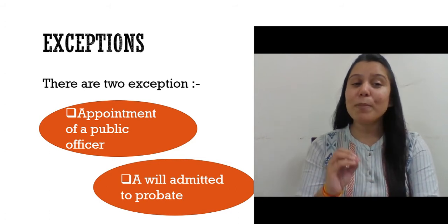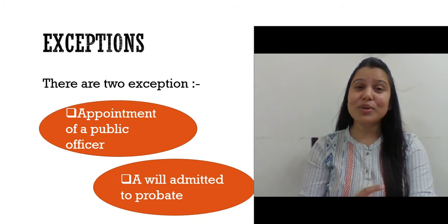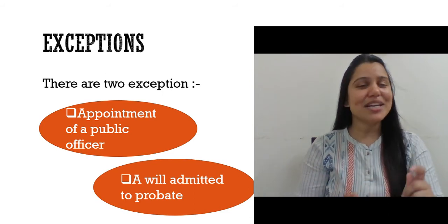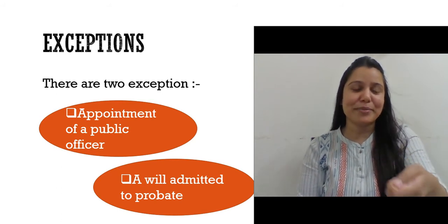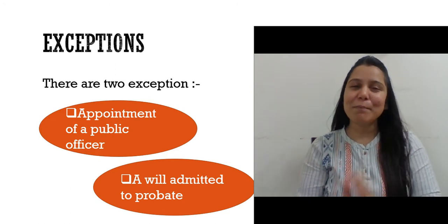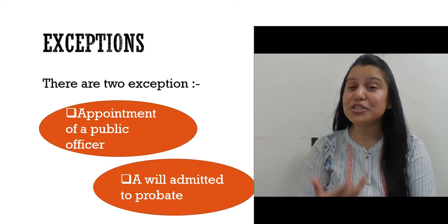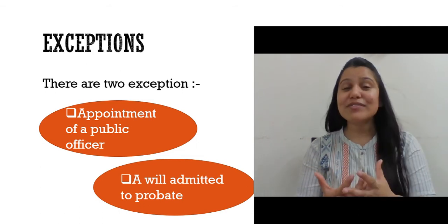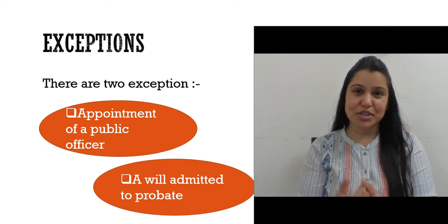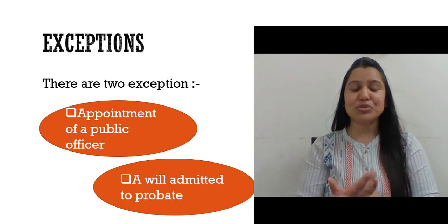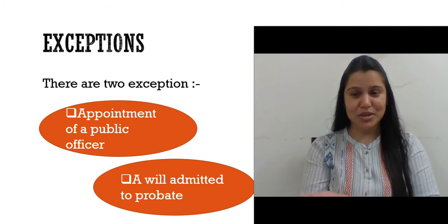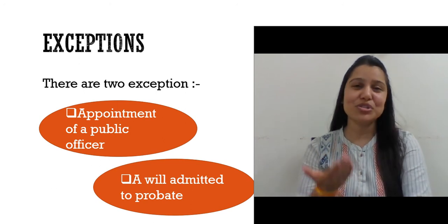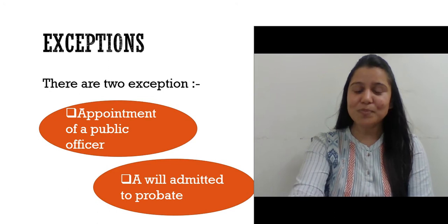There are two exceptions. The first is appointment of a public officer. When somebody is a public officer appointed through writing, but that person is present in the office, he does not need to show the appointment letter to the court. The second exception is a will admitted to probate. Probate is a document received from the court after the legality of the will has been proved. Once you have received the probate, that is the sufficient document — you do not need to show the will again.